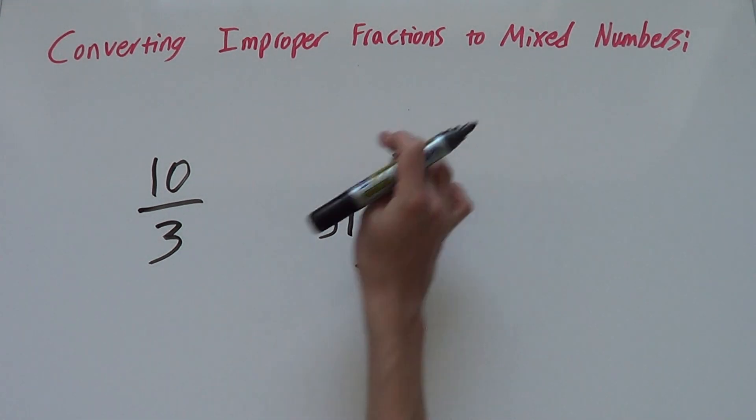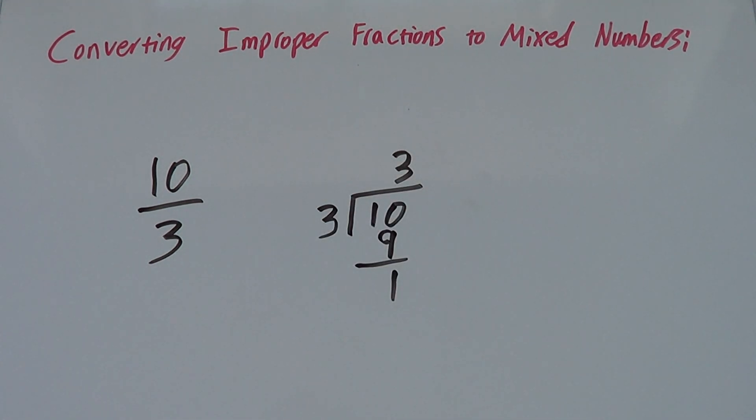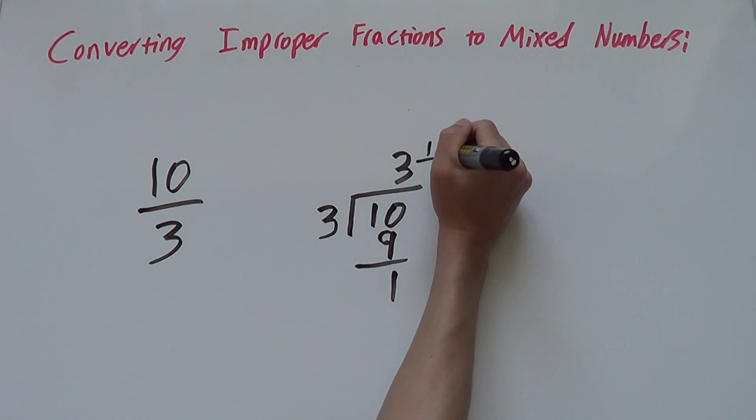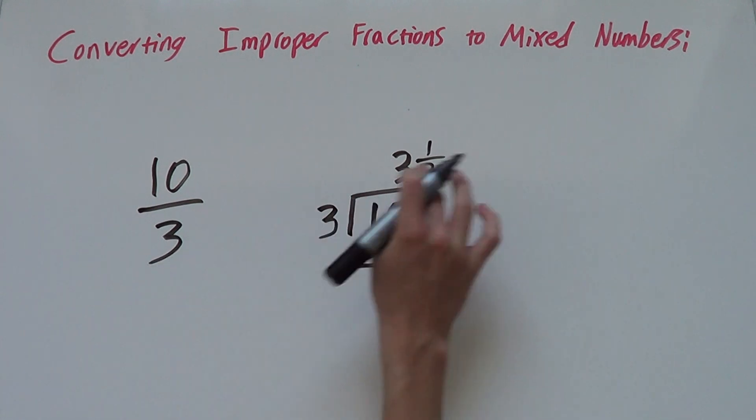So our big number at the front will be 3 and then we'll have 1 over 3 because our denominator will always stay the same.